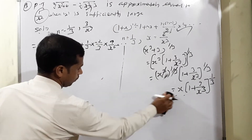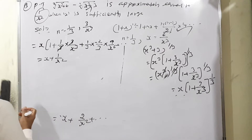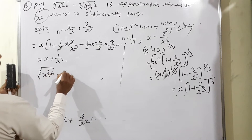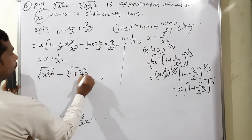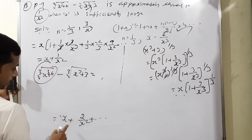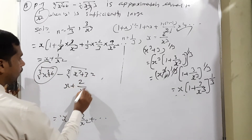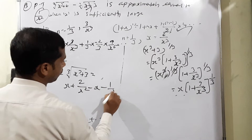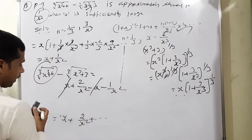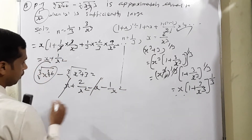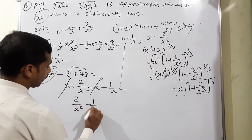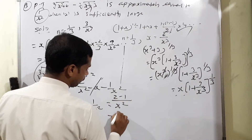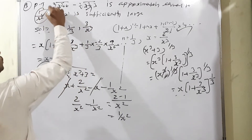Now subtracting: cube root(x³+6) − cube root(x³+3) = (x + 2/x²) − (x + 1/x²). The x terms cancel, and we get 2/x² − 1/x² = 1/x². This matches what we needed to prove. Hence proved.